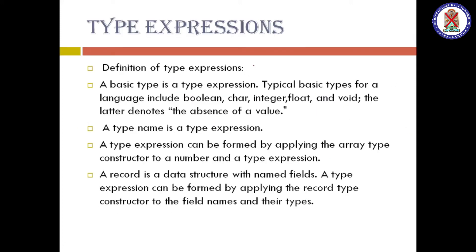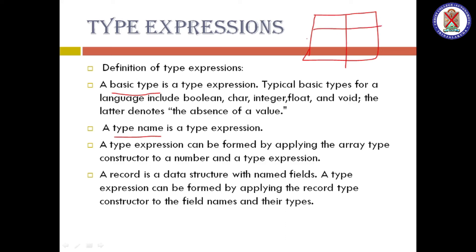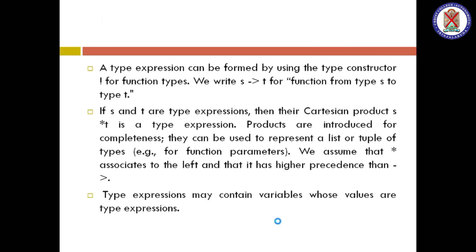We have discussed the definition of type expression. Next, what are the different types of expressions? First, every basic type — integer, float, etc. — is a type expression. Next, a type name is also a type expression. Earlier we saw that integer is a type expression. Next, a type expression can be formed by applying a constructor to a type — that is also a type expression, as we saw with the array example. Next, record — record means hierarchical data, like a symbol table — that is also a type expression formed using fields, field names, and their types.